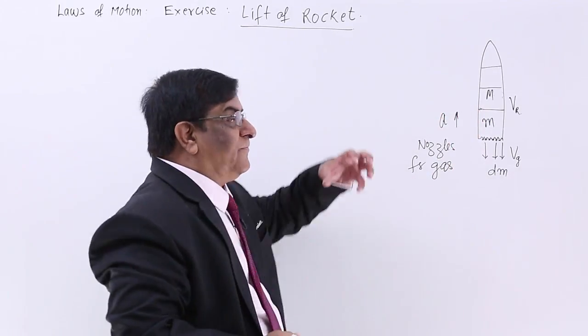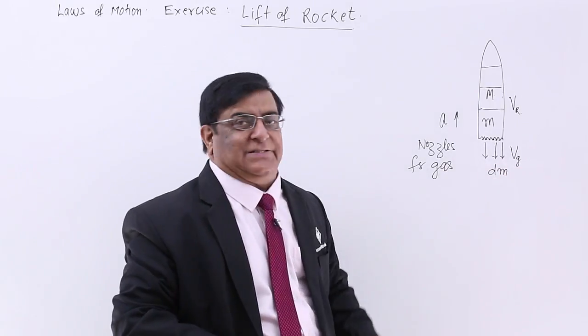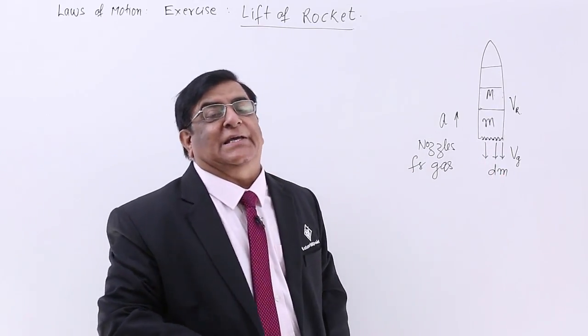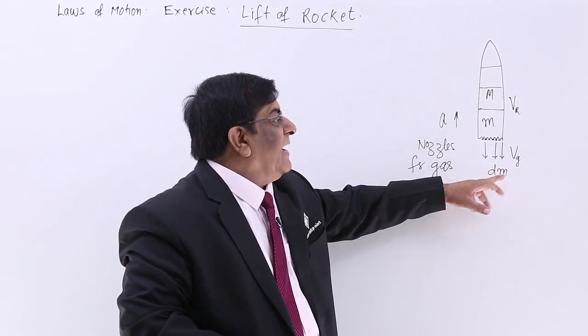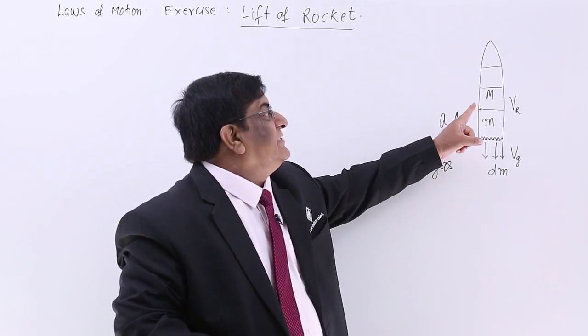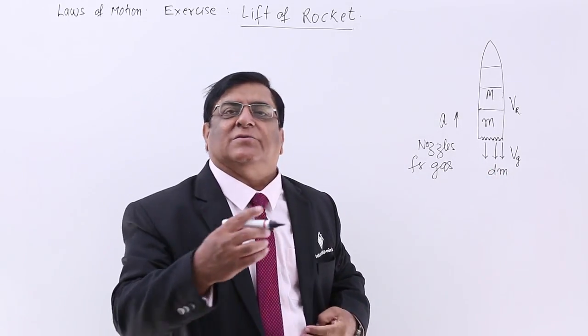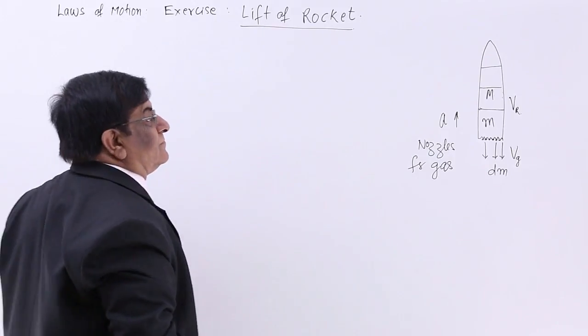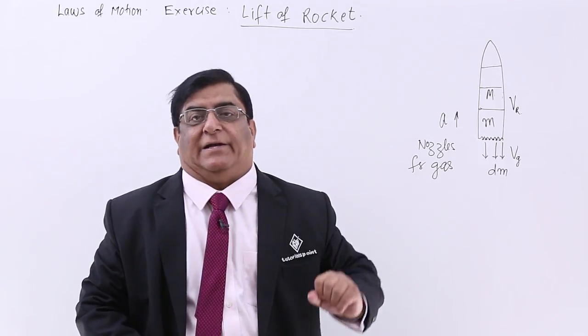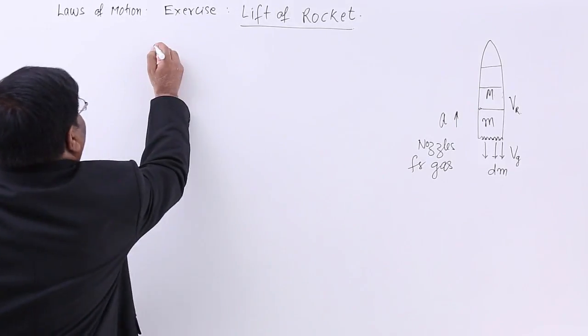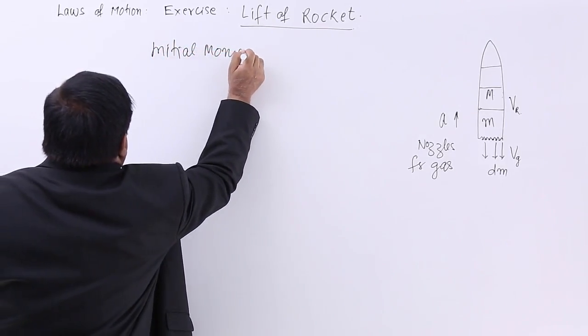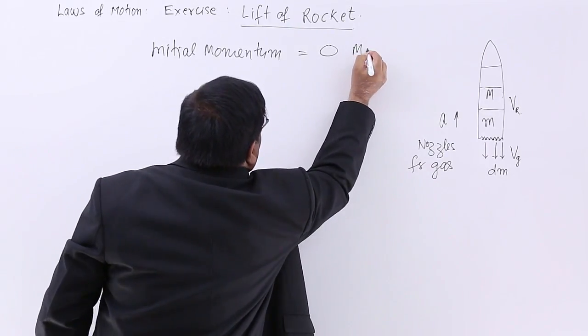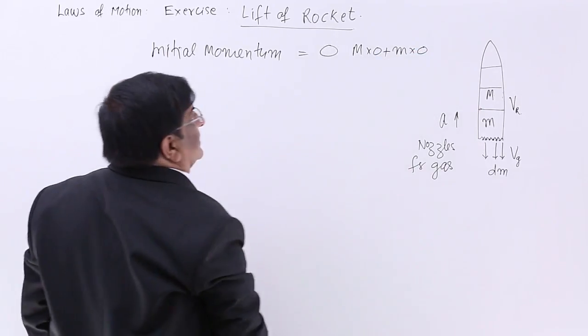The gases come out with a lot of high speed velocity, velocity of gas v_g. dm, a small mass, is the rate of burning of fuel. If dm gases have burnt, then dm is the change in the mass. Initial momentum when it is not moving is zero.